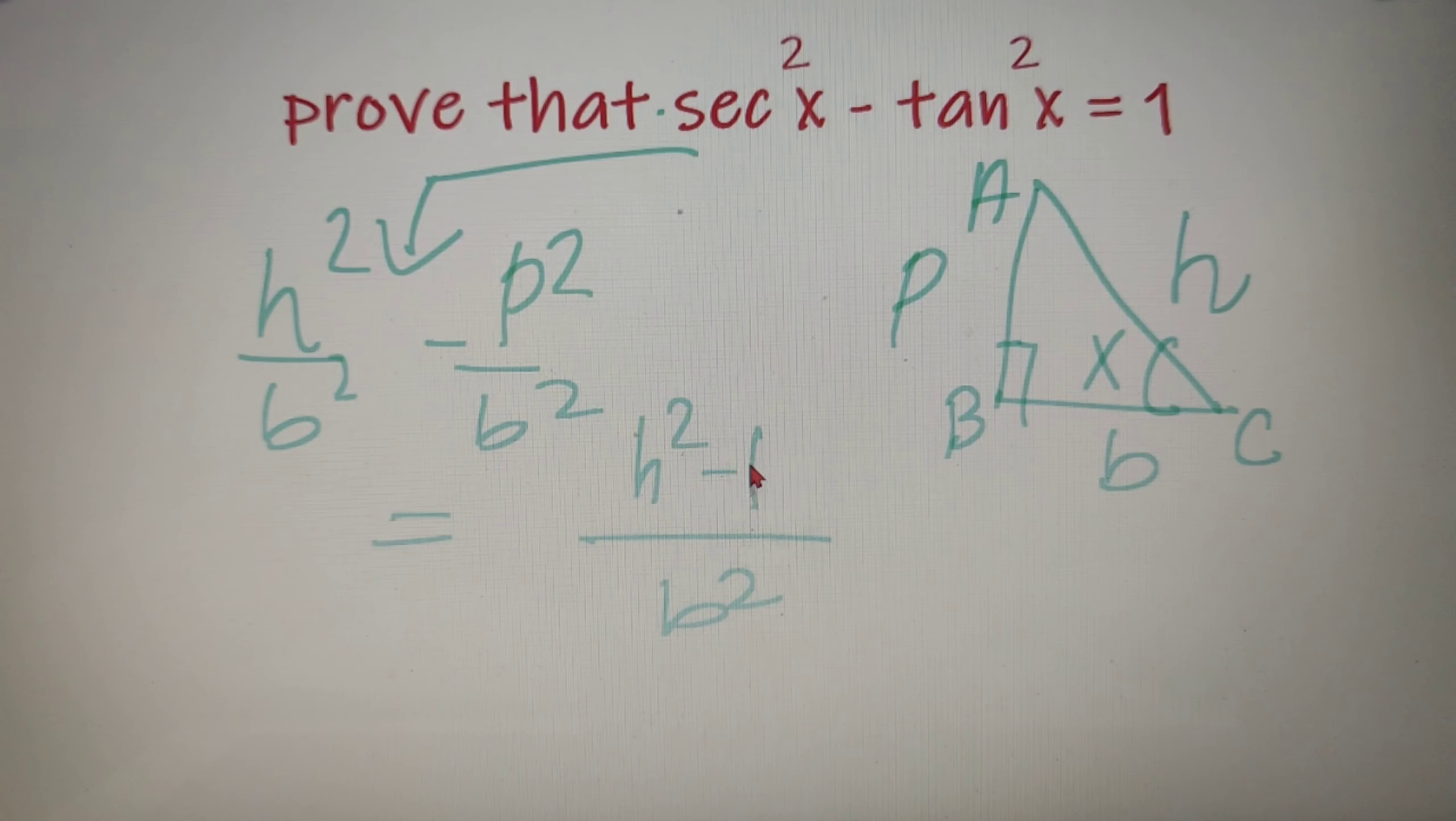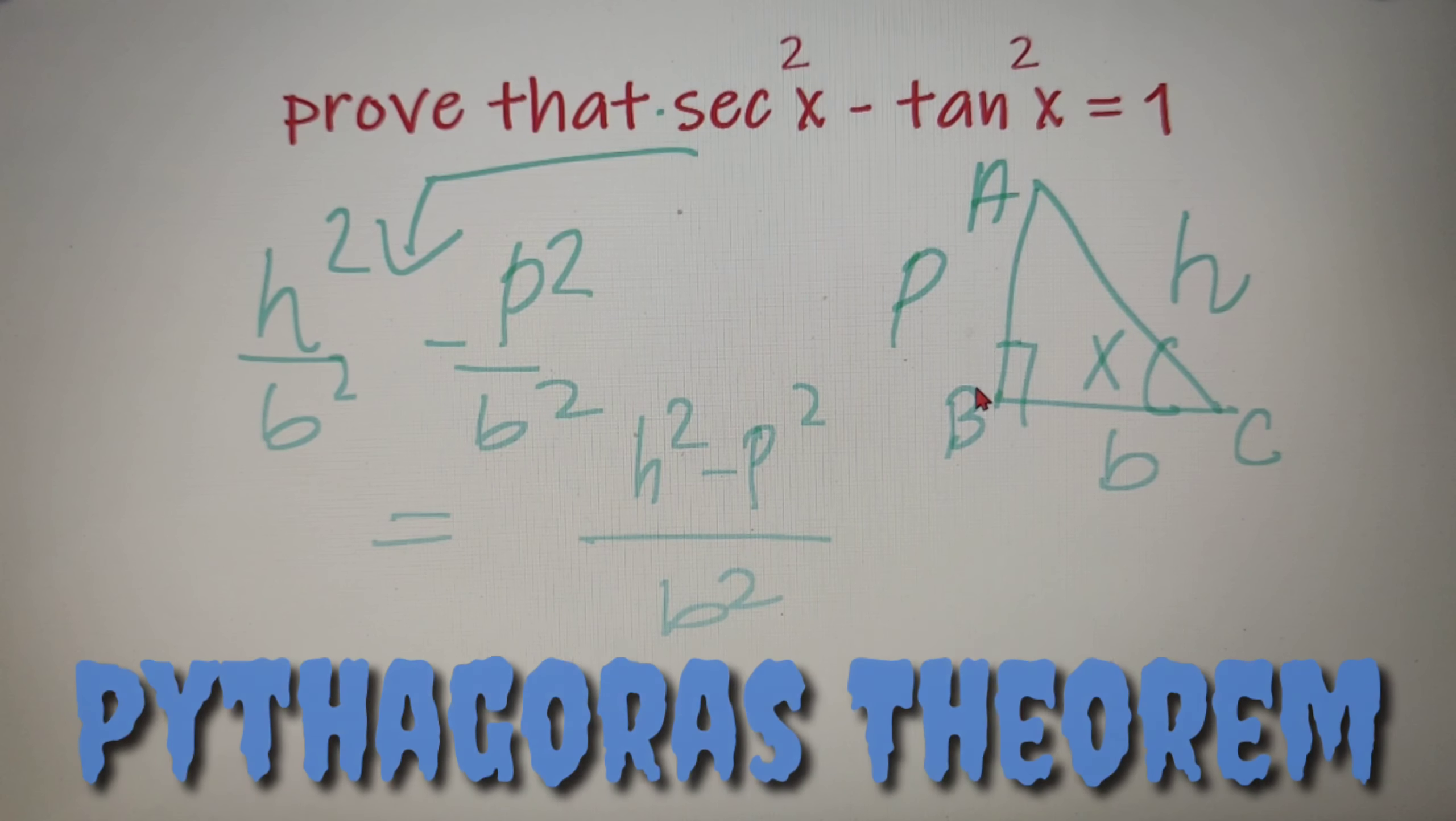Now we will take LCM of these two fractions which gives the result as h² minus p² by b². So sec²x minus tan²x is equivalent to (h² - p²)/b².